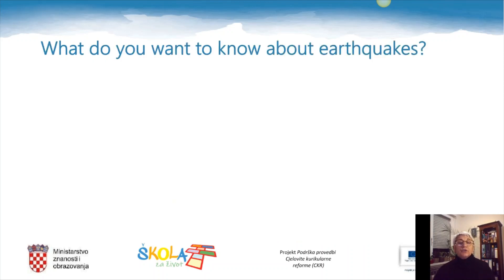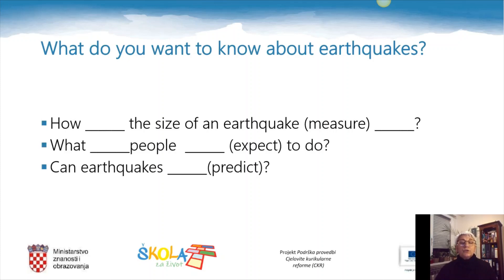When we start learning about a topic, we start from the question of what we really want to know about it. If you are watching this video in front of your computer, pause and think: what would you like to learn about earthquakes? What is it that you would like to know more about? If you are watching this on television, I will offer you three questions. Look at my questions — the verb is missing in every one of them. What is the form of the verb? The passive voice is what you need to use here.